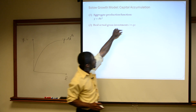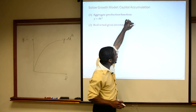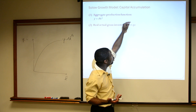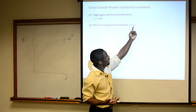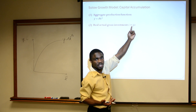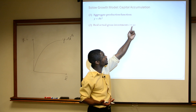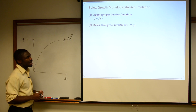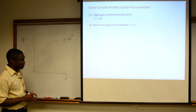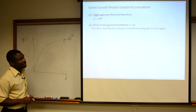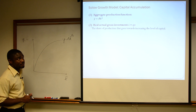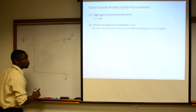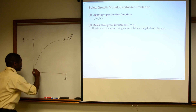We're taking some fraction of our income, or some fraction of our output, and we're saving it — call it that fraction S, which in turn becomes investment. That's the share of production that goes towards increasing the level of capital.